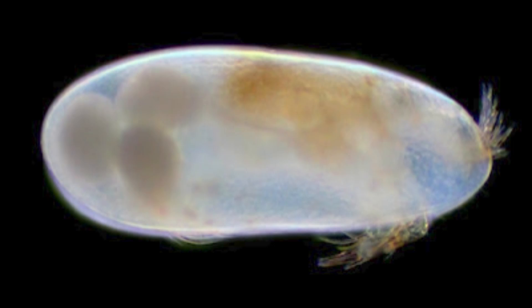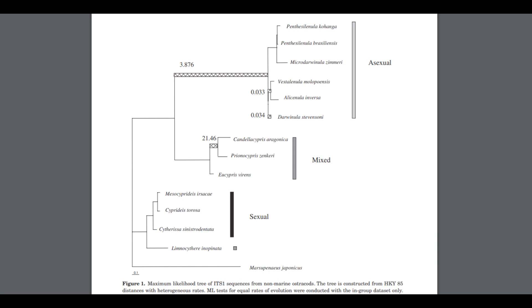Darwinulid ostracods are a bit more recent in their switch to asexuality, making the change between 200 and 100 million years ago. Aside from having very large population sizes, one unique aspect of darwinulid ostracods is their very slow rate of evolution. There are very small morphological differences between darwinulid genera and species, and studies of darwinulid genes further confirm that their genes evolve much slower compared to other clades of ostracods. This very slow rate of evolution could help darwinulids avoid accumulating too many deleterious mutations. However, other non-marine ostracods have similarly low rates of evolution, so it could be the case that this slow rate was not an adaptation to asexuality, but a pre-adaptation for it.